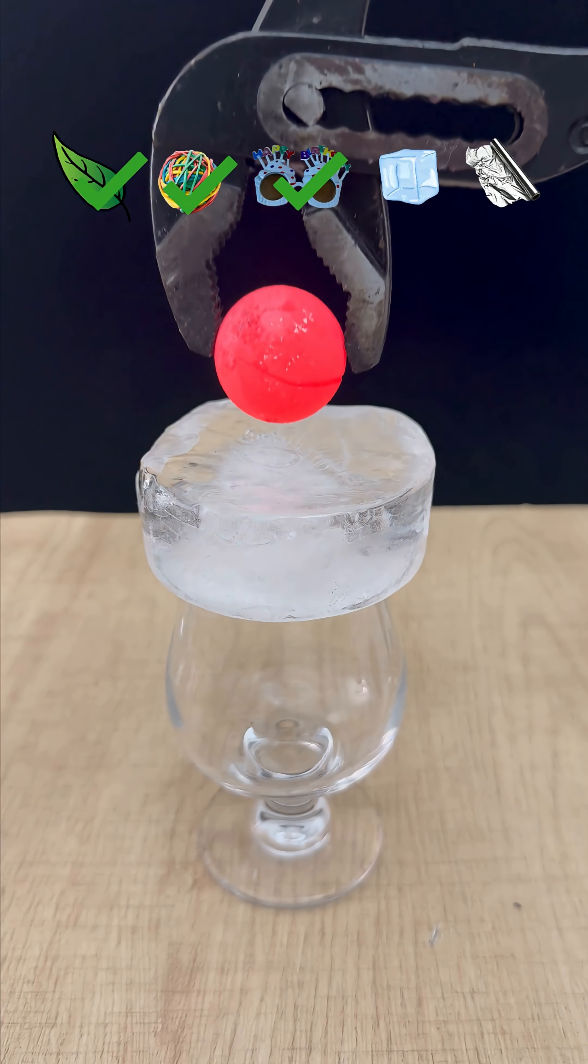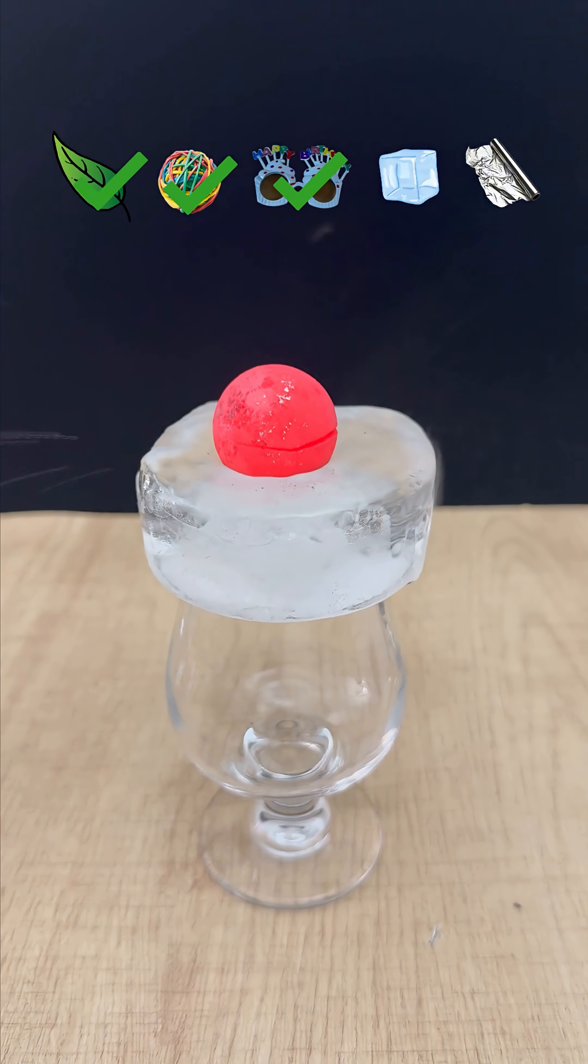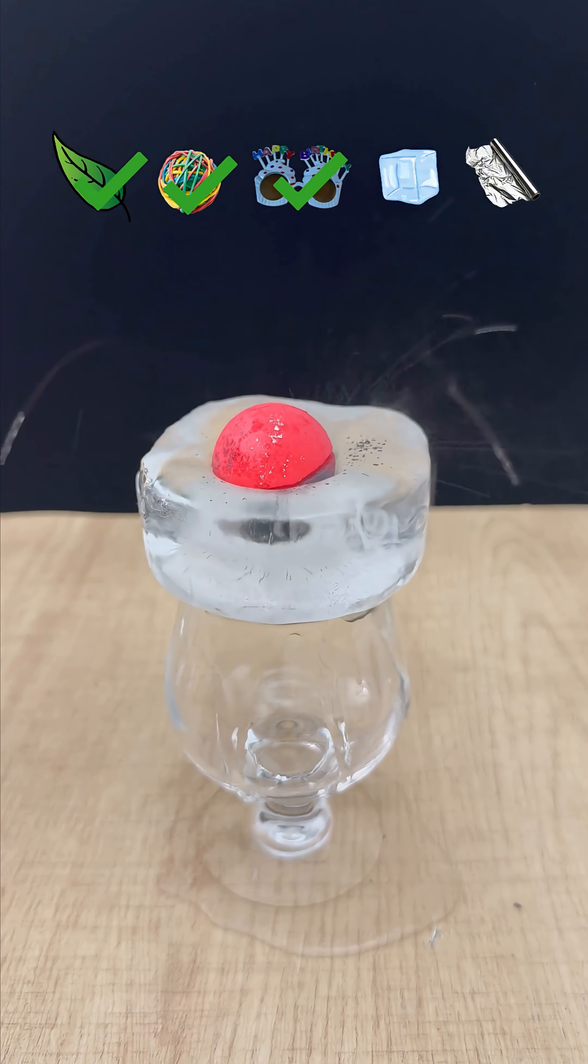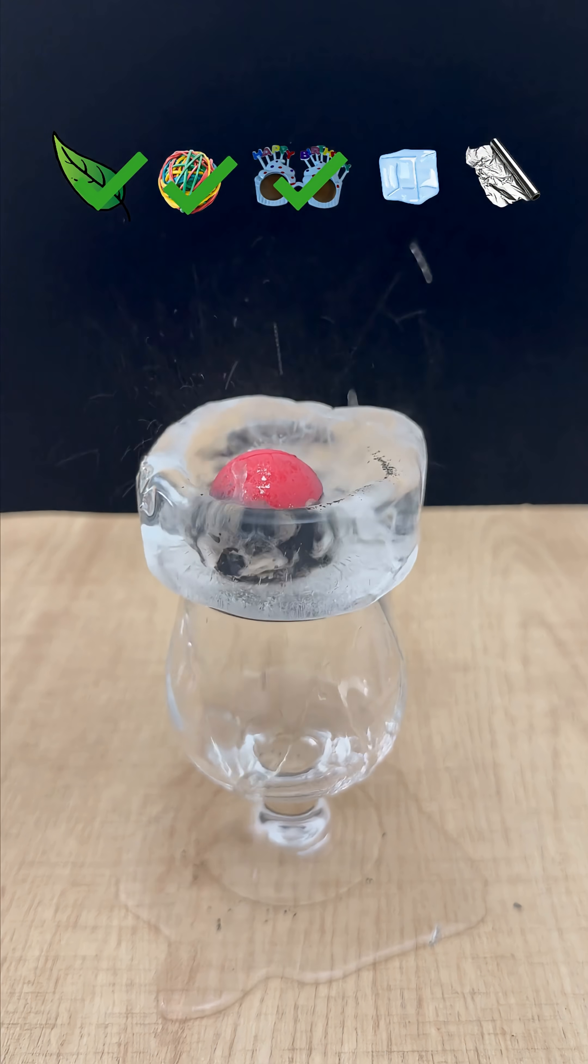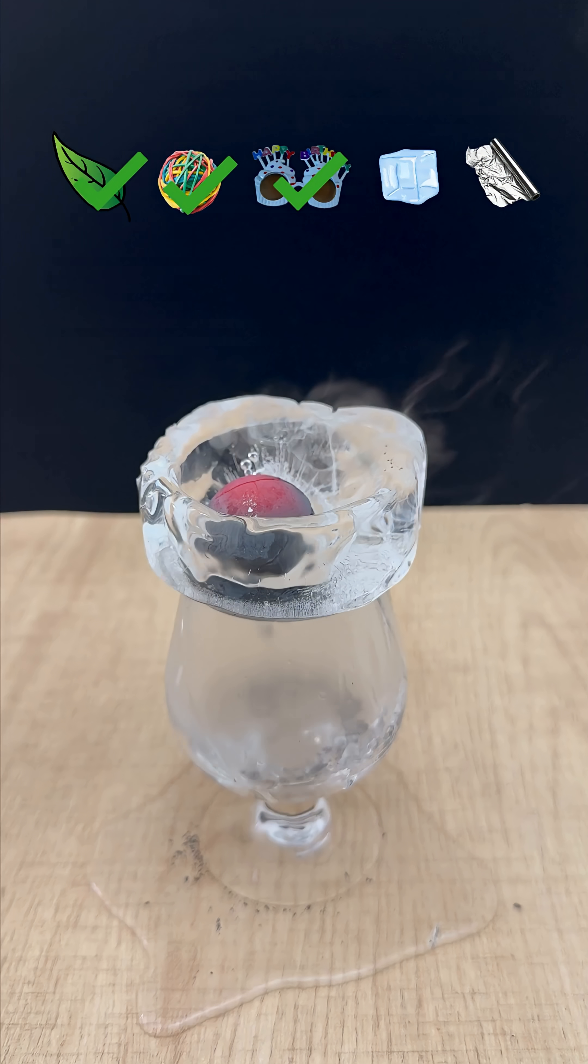Then we have ice. The moment the ball landed, the ice started to sizzle and melt fast, creating a perfect hole before the ball slipped through into the glass.